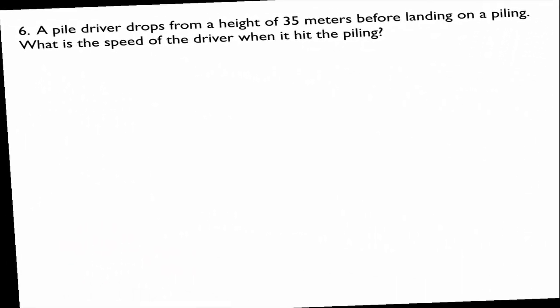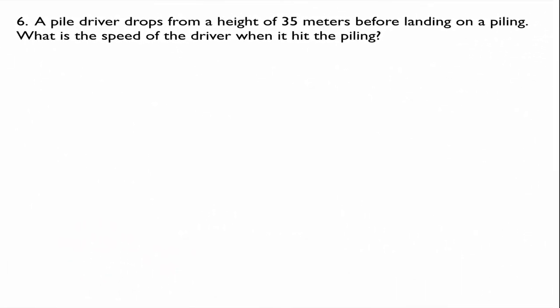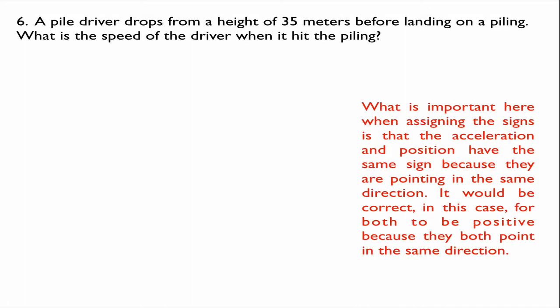Last problem, number six. A pile driver drops from a height of 35 meters before landing on a piling. What is the speed of the driver when it hits the piling? A piling is a big steel tube filled with concrete used to hold up bridges and buildings. What's important here is when I'm assigning signs to acceleration and position — everything that goes in the same direction has to have the same sign.